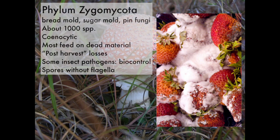Most of them feed on dead material, or what we call post-harvest losses. So if you see moldy strawberries, moldy fruit, or moldy bread, a lot of the time what you're looking at is the manifestation of a zygomycete — not always, but a lot of the time. So they are often associated with what we call post-harvest losses.